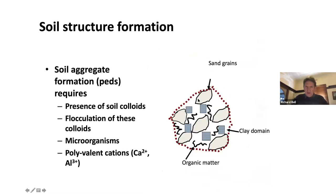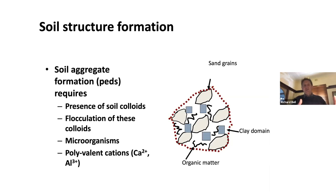Peds or aggregates form where sand grains, clay domains, and organic matter together with polyvalent cations — particularly calcium and aluminium — chemically bind together to form secondary structure. When you dig a soil profile with a spade, you can see these peds just fall out of the material. They change the pore size distribution: on sands they create more mesopores and micropores for greater water holding, and on clays they break it up to create more macropores for better aeration, drainage, and root penetration.